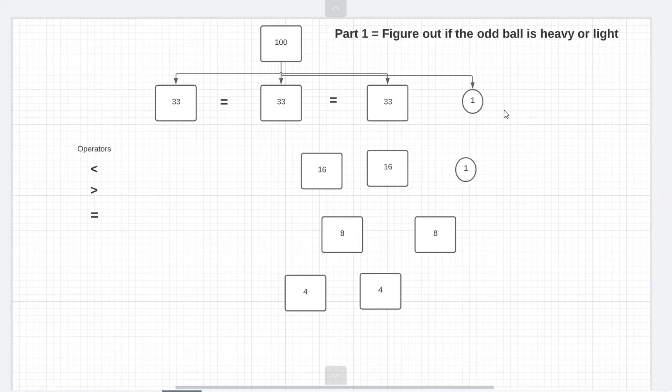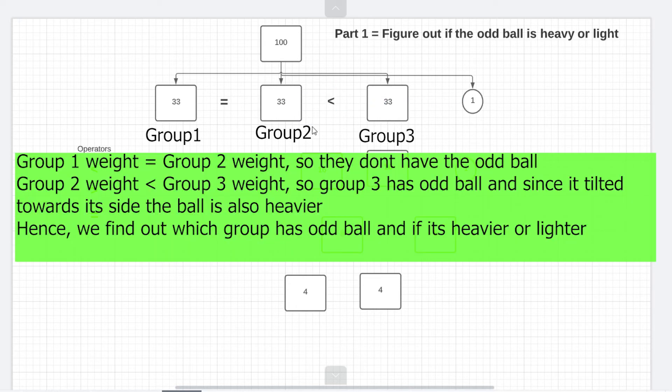What we need to figure out is how many comparisons are needed in a worst case scenario. So let's say when we were comparing group two and three instead of them being equal group three had more weight and it tilted the beam balance down. So now we know that the group three is having the odd ball and that odd ball is heavier. So just by doing these two comparisons in the beginning we'll be able to figure out if the odd ball is heavy or light. So these two comparisons in the beginning are really important and from now on it's just a simple binary search.